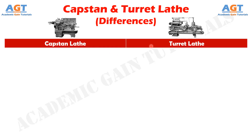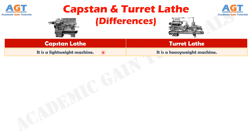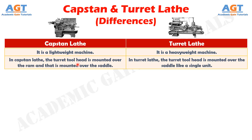A capstan lathe is a lightweight machine, whereas the turret lathe is a heavyweight machine. In capstan lathe, the turret tool head is mounted over the ram and that is mounted over the saddle, whereas in turret lathe, the turret tool head is mounted over the saddle as a single unit.